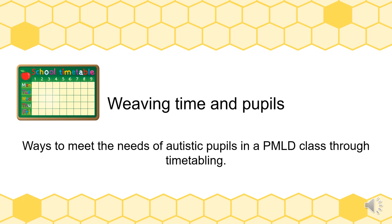This presentation is about looking at how timetabling can help include children who have different needs from perhaps the majority of the class within a school. Often within the PMLD class you may have one child who is perhaps more active or has different needs, including but not exclusively autistic spectrum disorder, and I'm interested in how we can support that child to be an integral part of the class whilst having their own individual needs met through clever timetabling.